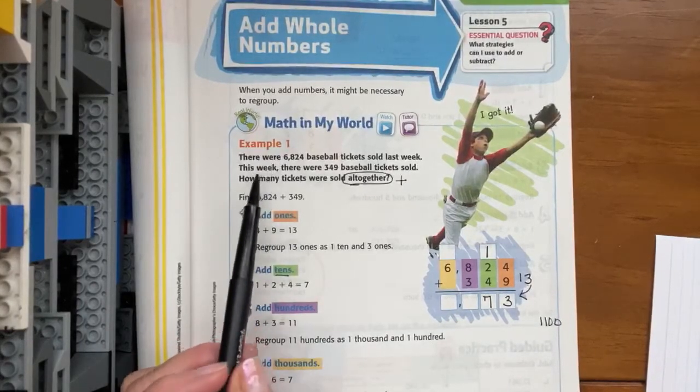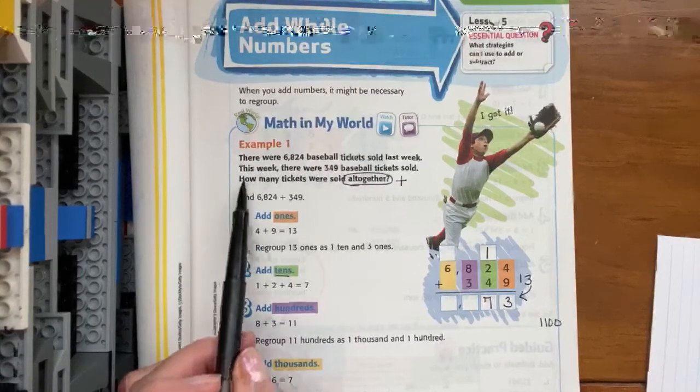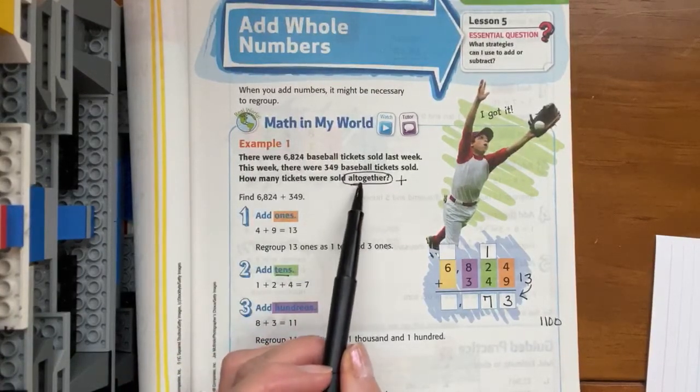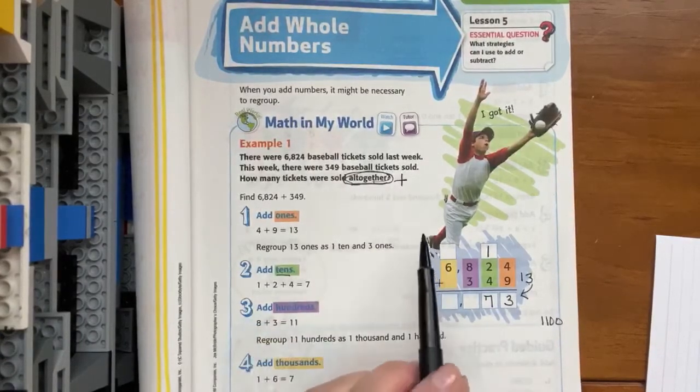I've already gotten started. I'm a little bit ahead of you guys. I've analyzed my story problem, and I know that it says how many tickets were sold all together. I've circled all together, and I made a note that it's telling us that we're going to need to add.